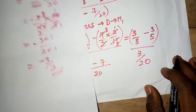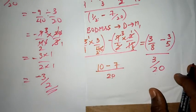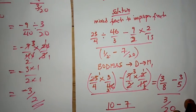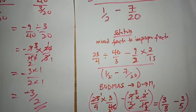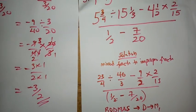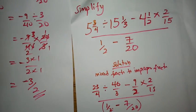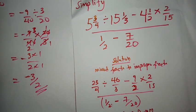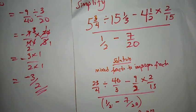At the end of it all, negative 3 over 2 is the final answer for this question. Thank you very much for joining this session — we'll meet again for the next section.